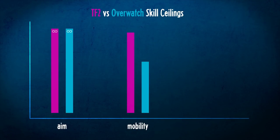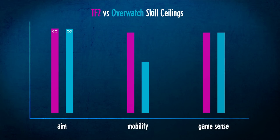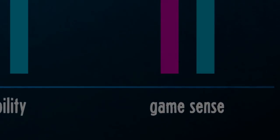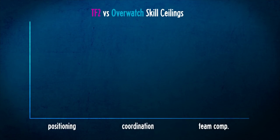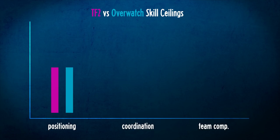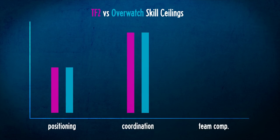Game sense is very broad, so let me break it down into three examples: positioning, coordination, and team composition. Positioning is something you can learn relatively quickly once you know the maps and use common sense. Coordination — working together, moving as a team, knowing when to dive in, when to fall back, communicating — these are things you learn last, especially without experience in a coordinated team. I'd call positioning and coordination at a similar level for both games.